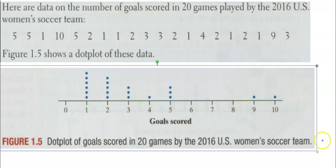Now notice, when we're looking at this, here is data on the number of goals scored in 20 games played by the 2016 U.S. women's soccer team, and they give us those 20 scores. Here is a dot plot that shows—there are 20 dots on this graph. If you don't believe me, hit pause and count the dots.